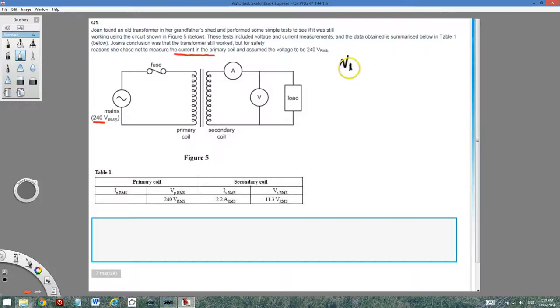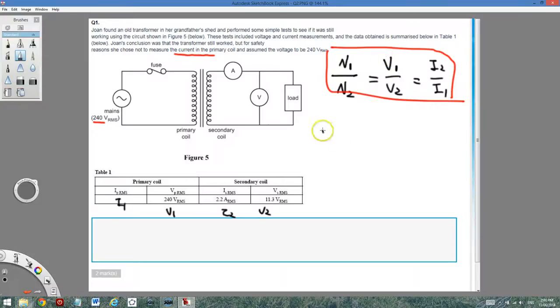So the number of coils in primary N1 divided by the number of coils in secondary N2. The ratio of N1 and N2 is same as the ratio of V1 and V2 is same as the ratio of I2 and I1. Now be careful with this twist. So in this case, I need to find I1. I know V1, V2 and I2, so I just use this part of the equation.